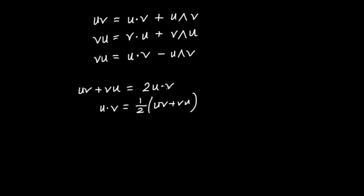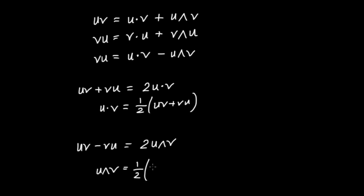We can do the same for the wedge product. Subtracting the equation for vu from the equation for uv: uv minus vu equals 2(u wedge v), since the dot product terms cancel and the wedge product terms add. So u wedge v equals one-half times (uv minus vu). These two formulas show the relation between the dot product, wedge product, and the geometric product, and we'll see them arise shortly when we talk about projections.